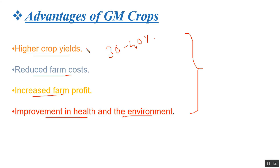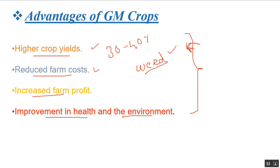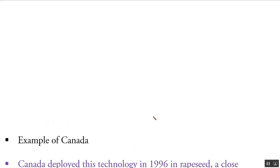Higher crop yield is necessary because India has a growing population and needs to cater to its needs. Farm cost is reduced because once weeds appear, we normally use pesticides or herbicides. The genetically modified crop has resistance to these herbicides, so only the weed gets affected and vanishes. Farm profit increases obviously if 30 to 40 percent more crop is produced. The improvement in health and environment is referenced from the ministry's website, and Canada provides a good example, which will be discussed next.